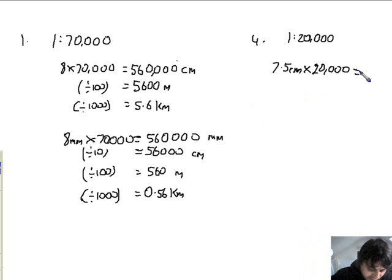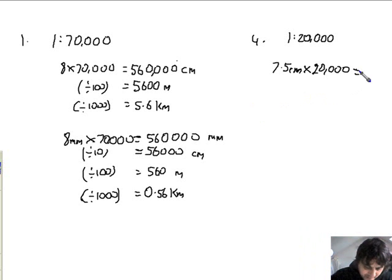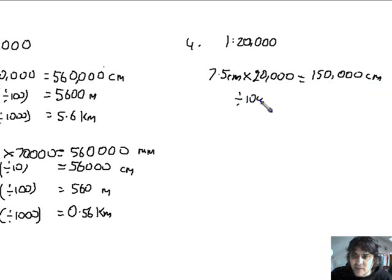7.5 times 20,000. I've got 150,000 centimetres. There you go. 150,000 centimetres in real life. Well, that's not very useful, is it? You can't visualise 150,000 centimetres. Let's divide by 100 to get into metres first. That will give me 1,500, having lost these two zeros at the end there by dividing by 100.